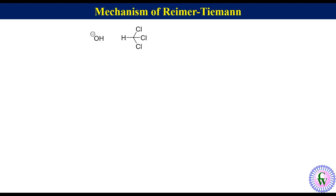Mechanism: Hydroxide ion is a base while chloroform is an acid because there are three electron withdrawing chloro groups attached to the carbon. Proton abstraction by hydroxide ion from chloroform produces water and trichloromethyl carbanion, which then eliminates chloride ion to produce dichlorocarbene.